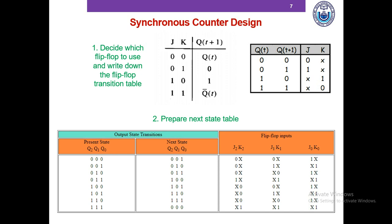The count changes from 0 to 7 and again goes on and on. We are designing a 3-bit up counter, so if the present state is 0 the next state is 1, if the present state is 1 the next state is 2, and so on. When we reach the last row — present state 7 — the next state is 0, and the counter starts counting all over again.